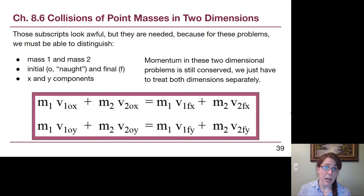The subscripts look kind of overwhelming but they're needed because for every single velocity piece in this pair of equations we need to know the difference between object 1 and object 2, we need to know the difference between the start of the problem and the end of the problem.